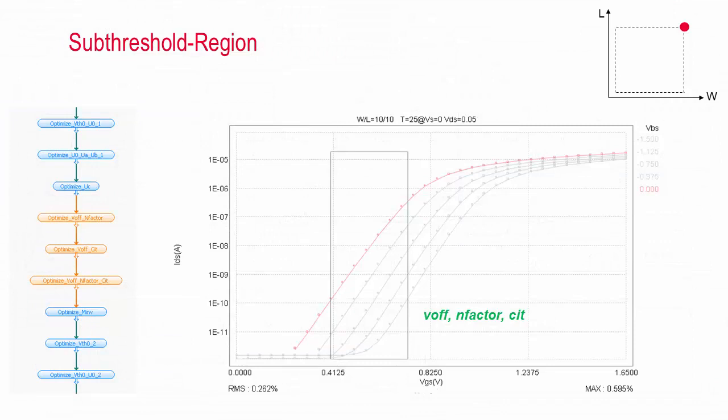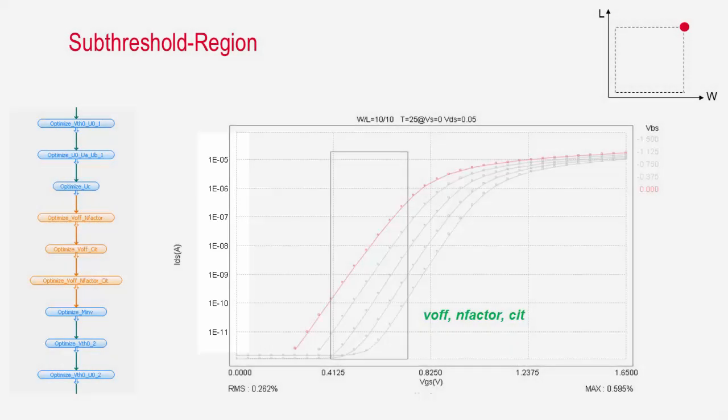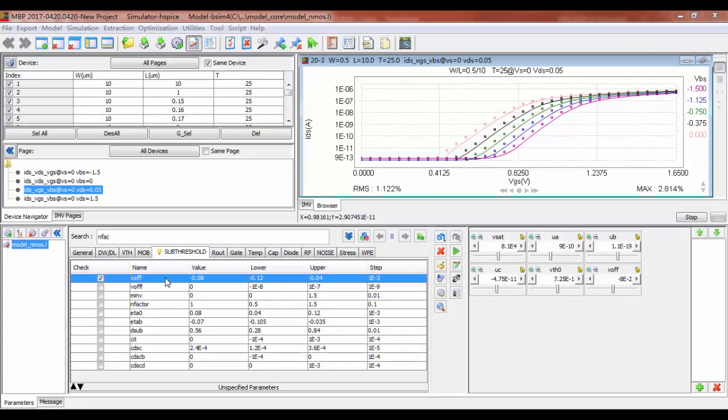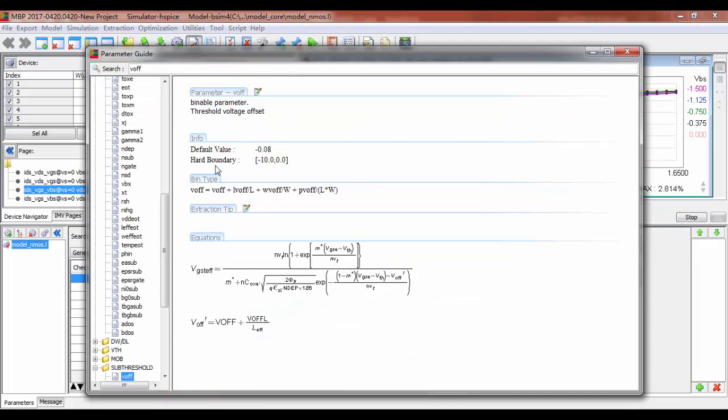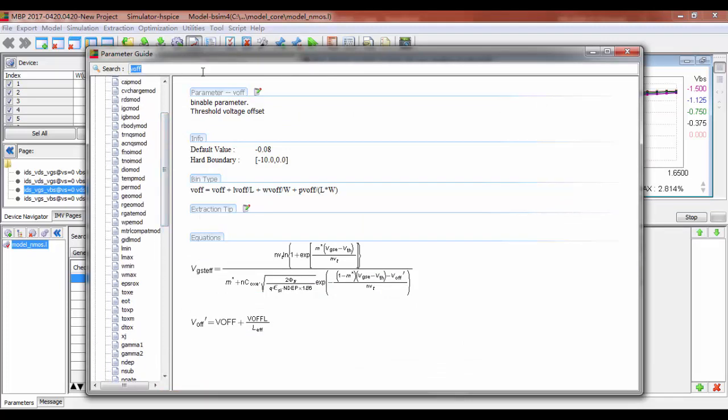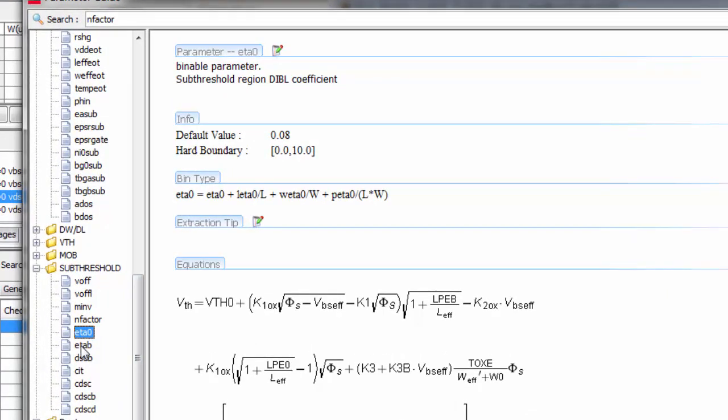Next, using data from the same large device, we optimize the parameters V-off, n-factor, and CIT in the sub-threshold region. To make the small drain current value feasible to recognize, here we display the y-axis in log scale. If you are not very familiar with certain parameters, the parameter guide in MBP can provide you useful information about the parameter, such as the definition, default value, hard boundary, and the equations.